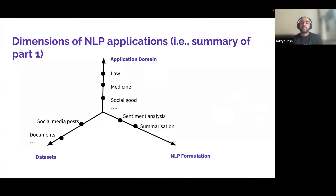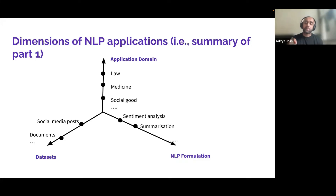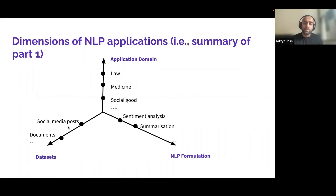That was the first part, where I talked about different applications. The picture that emerges is that NLP applications can be visualized along three dimensions: an application domain such as law, medicine, or social good; underlying NLP problems such as sentiment analysis and summarization; and different kinds of datasets such as social media posts, legal documents, or medical papers. When we look at NLP applications, we should be looking at these three dimensions.